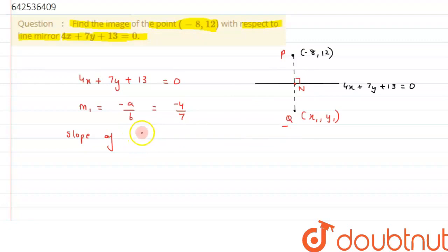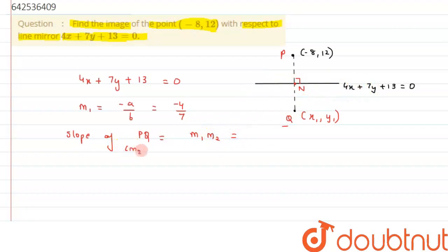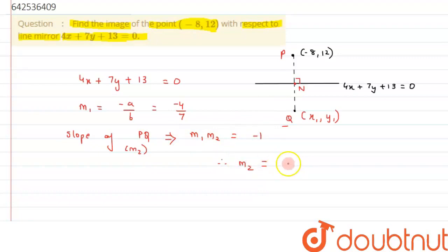So the slope of PQ — let's suppose it to be M2 — since both lines PQ and the mirror are perpendicular, we can say M1 times M2 equals minus 1. Therefore the value of M2 comes out to be 7 by 4.